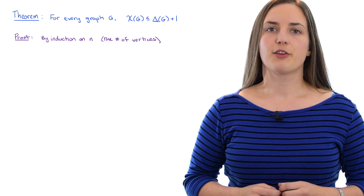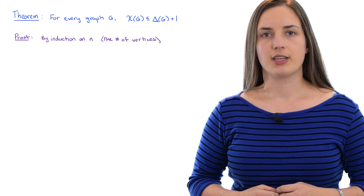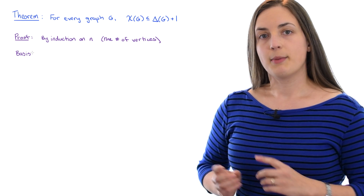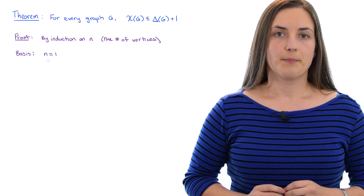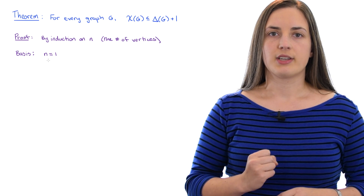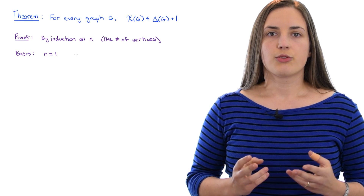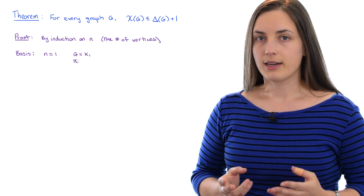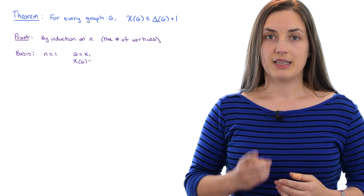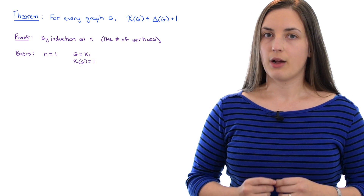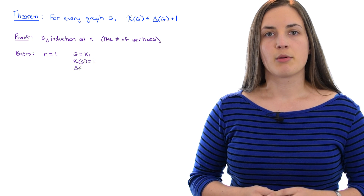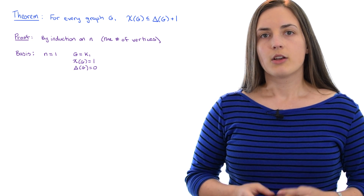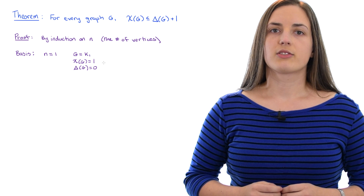The first thing to do in a proof by induction is to figure out the base case. In this case the base case is when n equals one, and here we just have a single vertex, so the graph is the complete graph on one vertex. Obviously the chromatic number of that graph is one — you require one color for that one vertex — but the maximum degree is zero because there are no edges. So the base case works and the theorem holds.